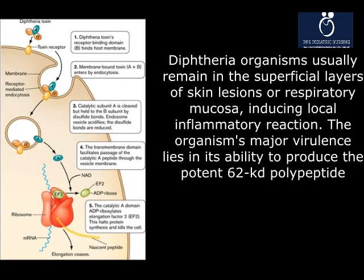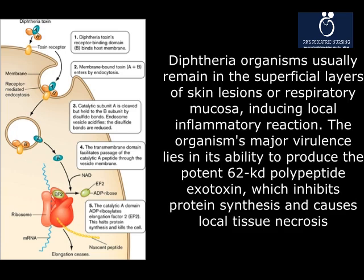Diphtheria organisms usually remain in the superficial layers of skin lesions or respiratory mucosa, inducing a local inflammatory reaction. The organism's major virulence lies in its ability to produce a potent 62 kDa polypeptide exotoxin, which inhibits protein synthesis and causes local tissue necrosis.